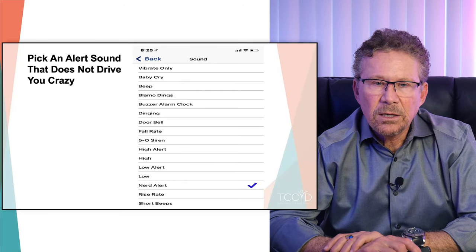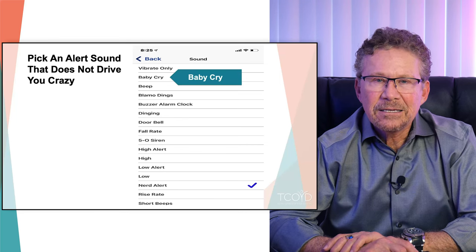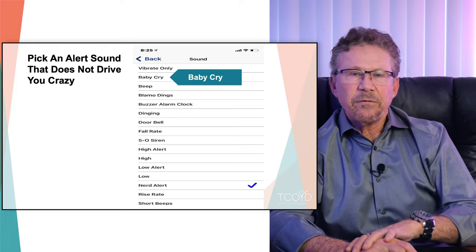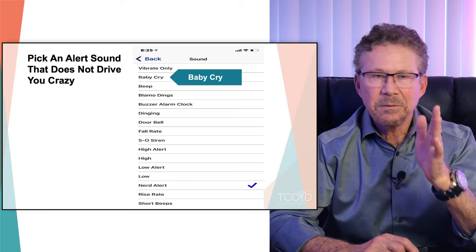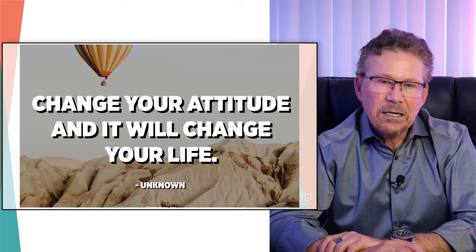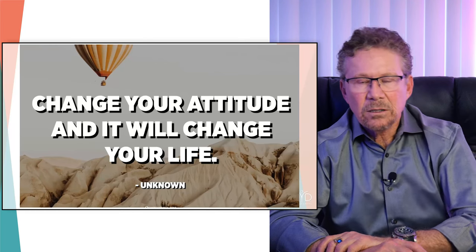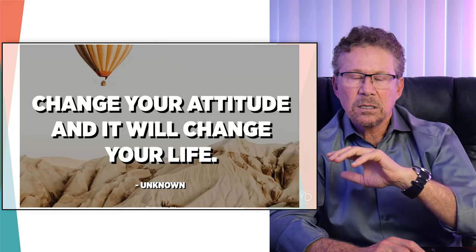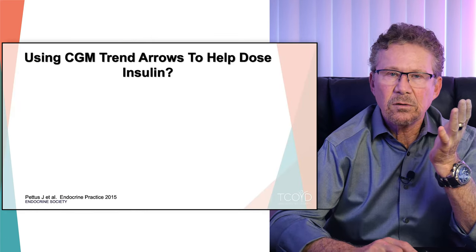I use something called nerd sound, but my favorite is baby crying — when you get below 55, this little baby sound comes on. You've got to change your attitude. I know so many of you set your alerts so high because you say it drives you crazy or drives your partner crazy. You just have to figure out the levels that will improve your time in range without driving you crazy.